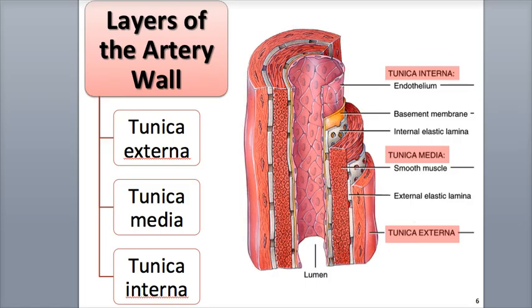There are three layers, also called tunics, that make up the blood vessel wall. Each of these layers consists of different tissues, such as an inner lining of epithelia, a middle layer of smooth muscle and elastic connective tissue, and an outer covering of connective tissue.